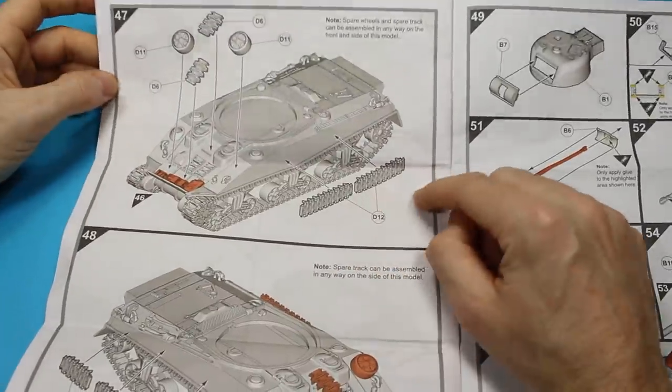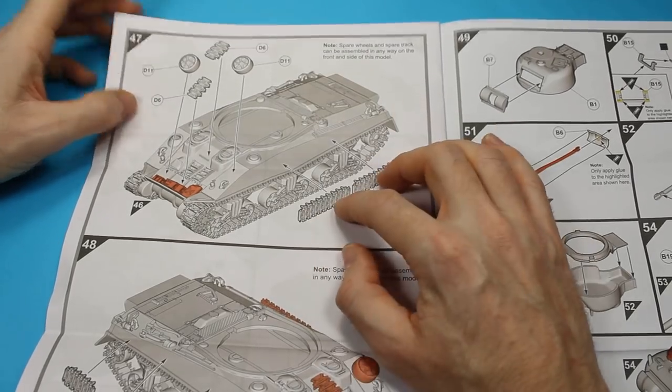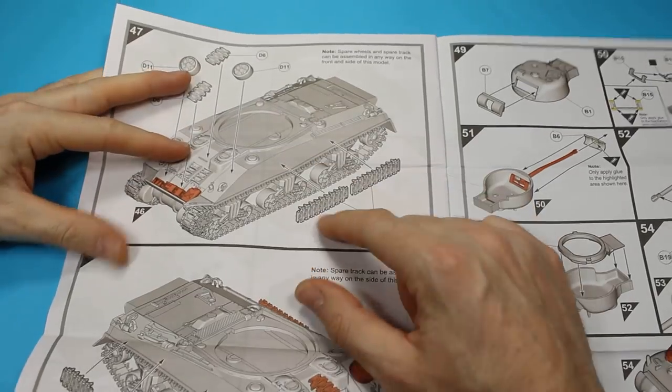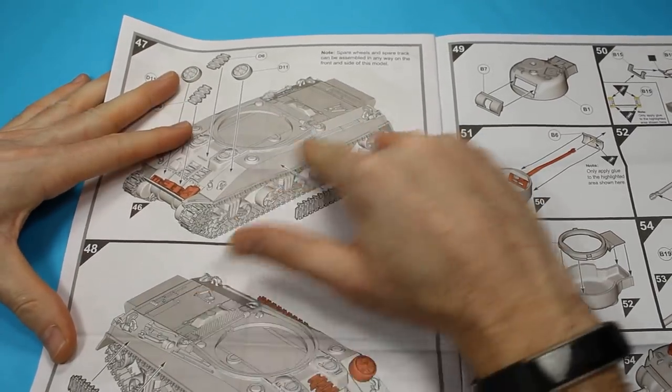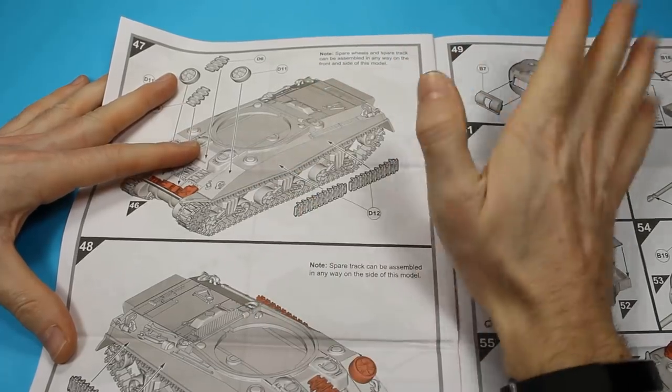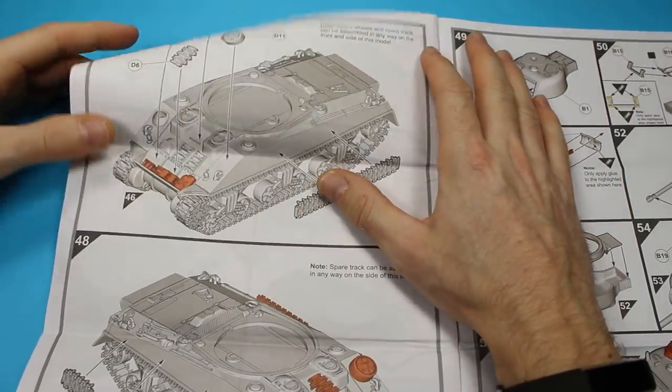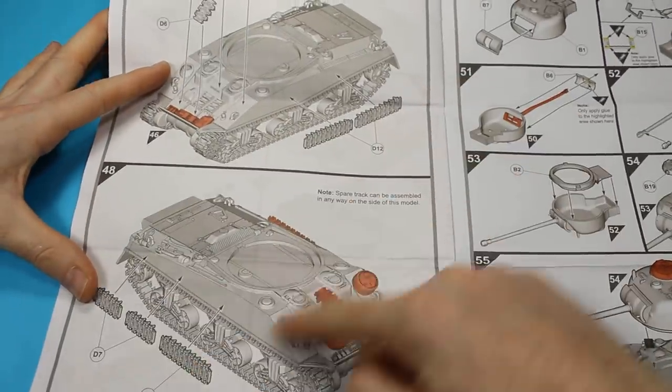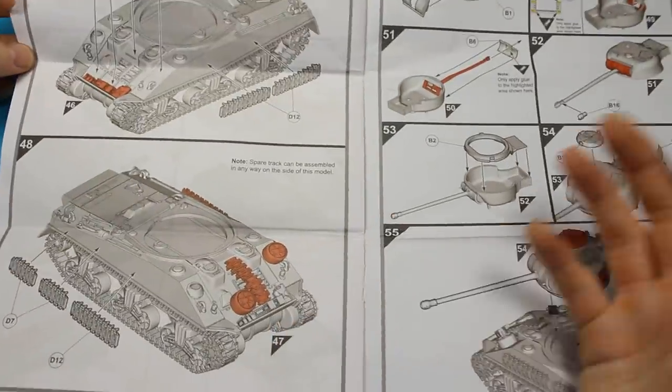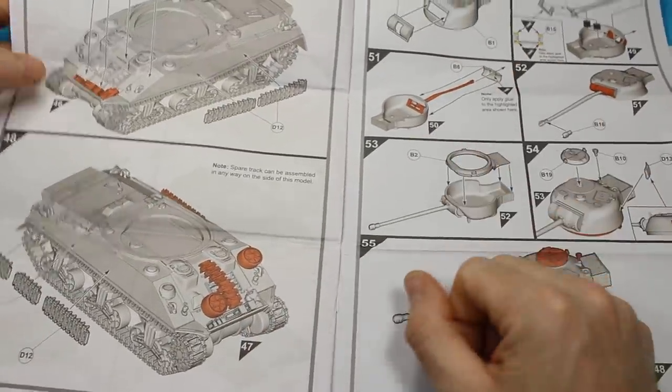And then we've got some applique armor as well, in the form of tracks. Now there are some great pictures on the internet of Fireflies with these things welded on, and that's my understanding. There's no fixing points on the side of the hull, they were just pushed up and welded on. So you just literally glue them on. Got lots of bits of tracks all over, and some spare wheels, and that really brings it to life, because these things did have a lot of stowage.